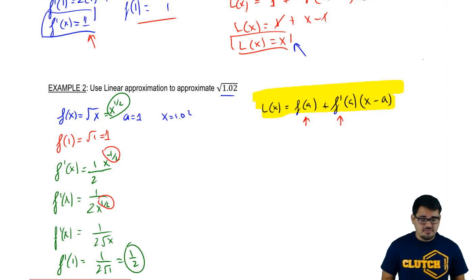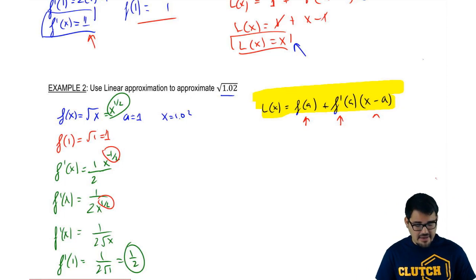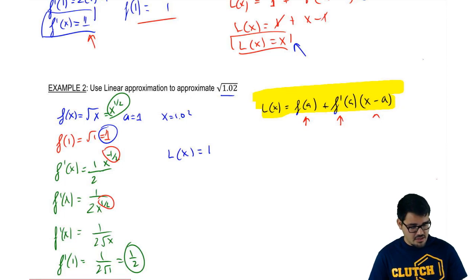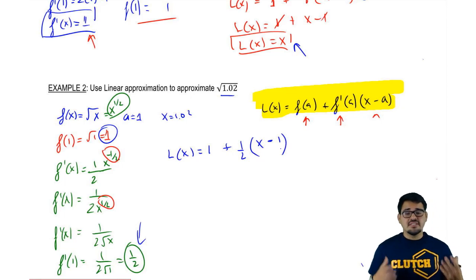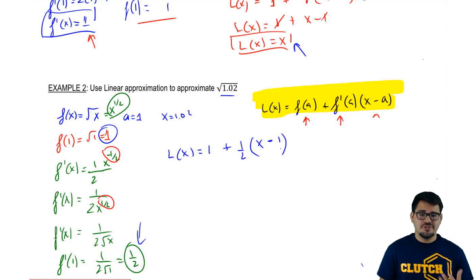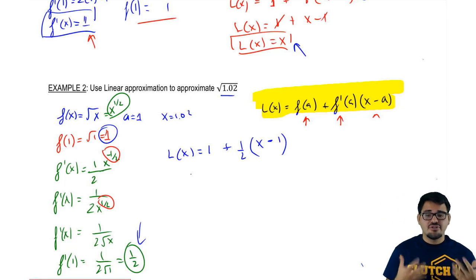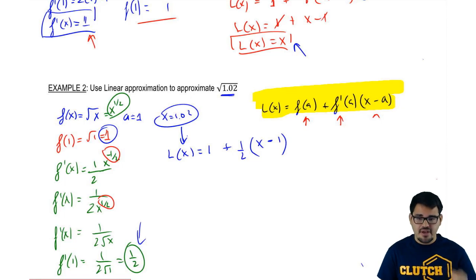Now I can put it all together and find my L of x. My linearization is L of x equals f of a, which is 1, plus f prime of a, which is one-half, times x minus a, where a equals 1. So L of x equals 1 plus one-half times x minus 1. This is a very simple linear equation that lets us solve for a complicated square root value. This is actually how people approximate square roots in their heads.